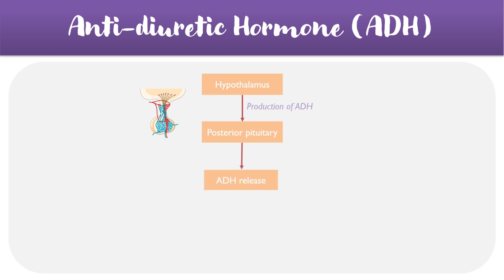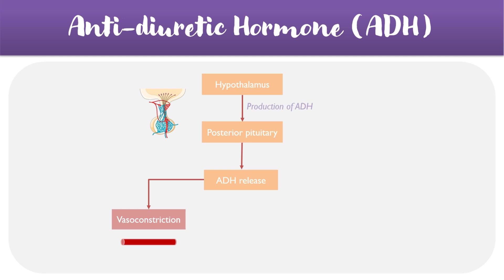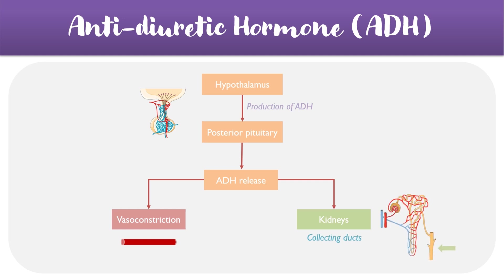ADH release has two main effects: the first being to increase vasoconstriction, which basically involves constricting blood vessels to increase blood pressure, and the second being to activate the kidneys — and more specifically, the collecting ducts of the kidneys, which are seen as the end parts of the nephrons.